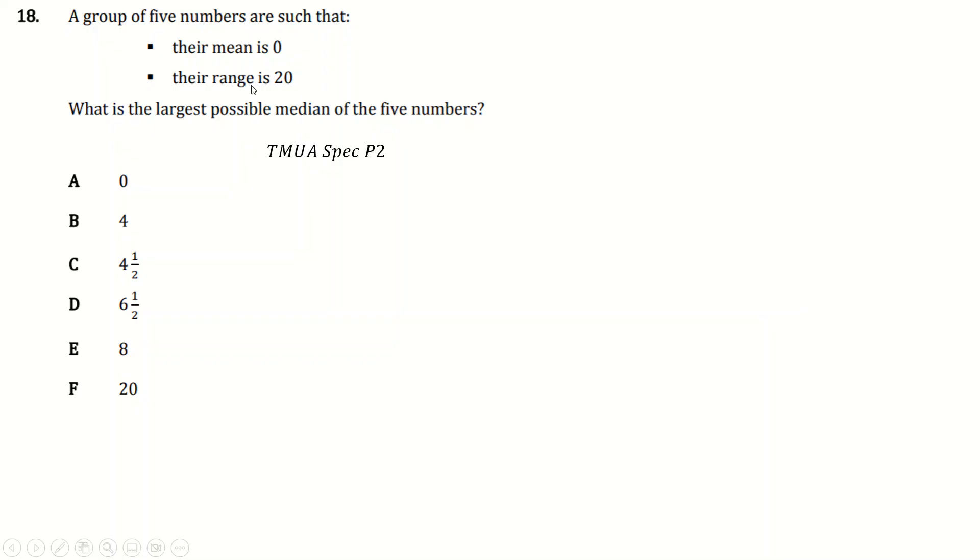Likewise here, same kind of idea. In fact, I'm going to do the opposite thing here. I'm going to do this one algebraically, even though you could have done it just with numbers, just to show you what that might look like. Here are five numbers. Mean is 0 means that they sum up to 0, so some of the numbers are going to have to be negative, I guess.